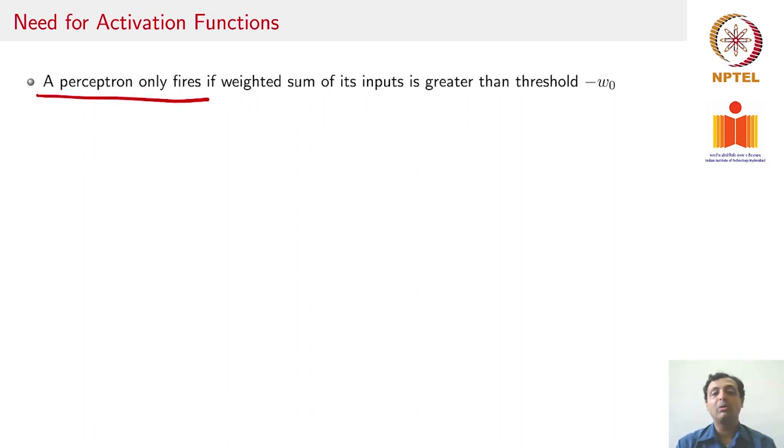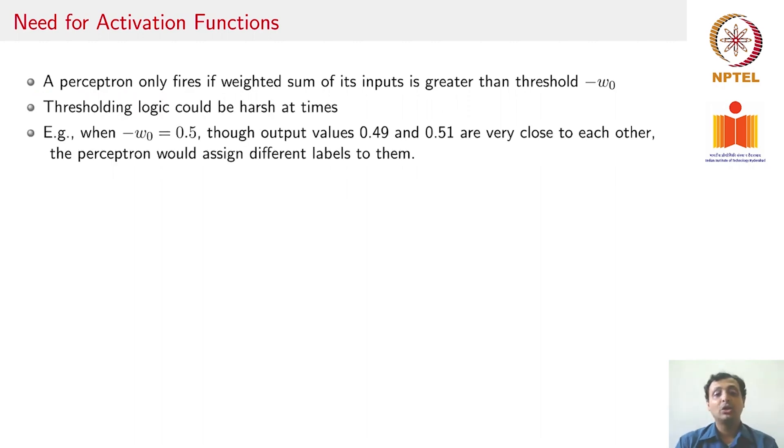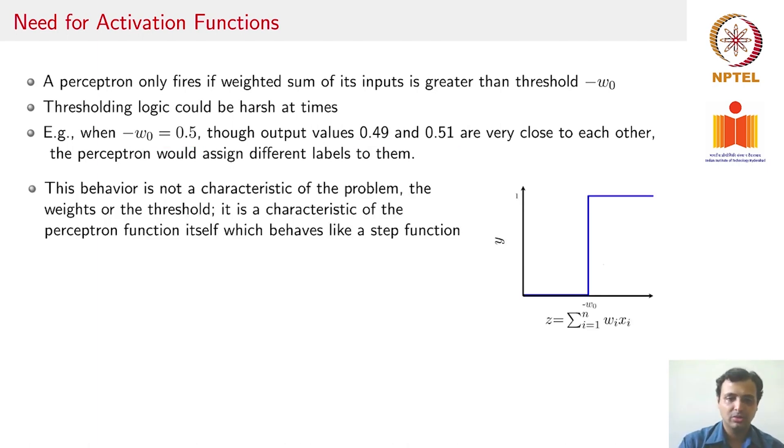So far we noticed that a perceptron only fires when the weighted sum of its inputs is greater than a threshold theta. This thresholding logic can become very harsh at times. For example, if your minus W_naught was 0.5, even 0.49 and 0.51 which are very close to each other will end up giving very different results. Your thresholding function is a step function where you have a sudden change in your output even with a very small change in your input.